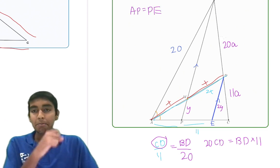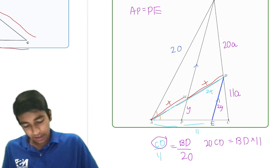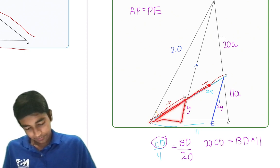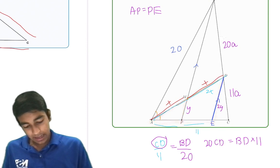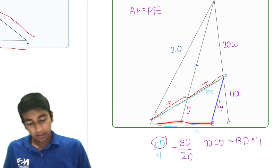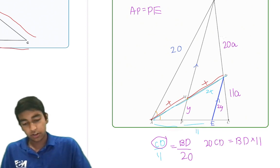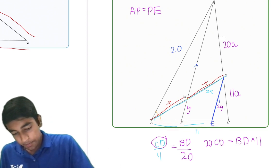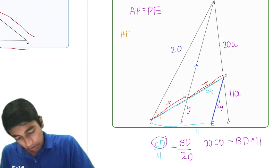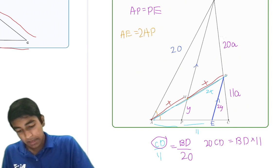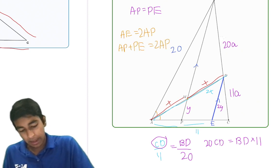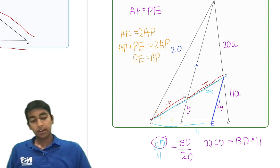AP equals PE. Why? Because they're similar triangles. And so that means AP equals PE, because AE is double AP by the similarity triangle ratio. So if AE is double AP, and AE is AP plus PE, then we can subtract AP from both sides to get PE equals AP. These two parts are congruent.